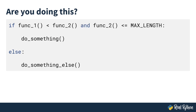Or say you have the return value of a couple of functions and execution depends on the order of these values. For example, if the return value of function one is less than the return value of function two, and the return value of function two is less than max length, then you'll do something, otherwise you'll do something else.